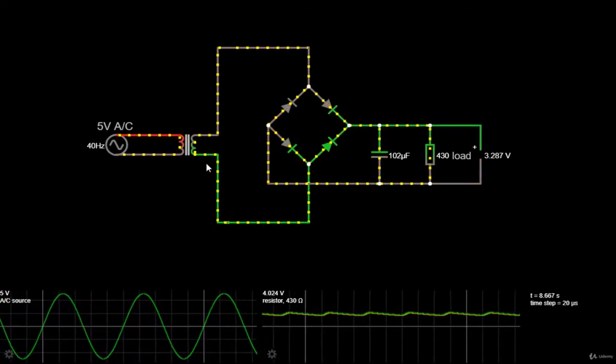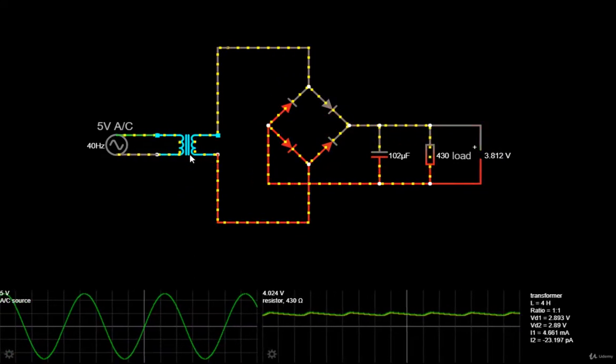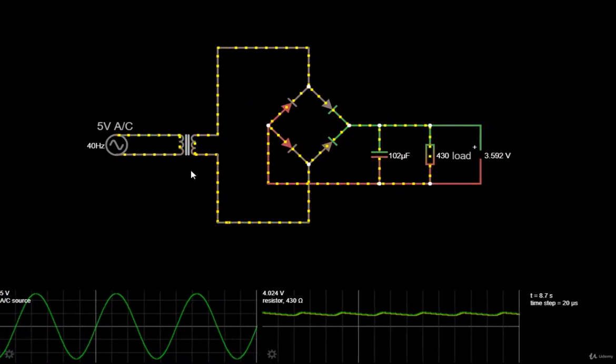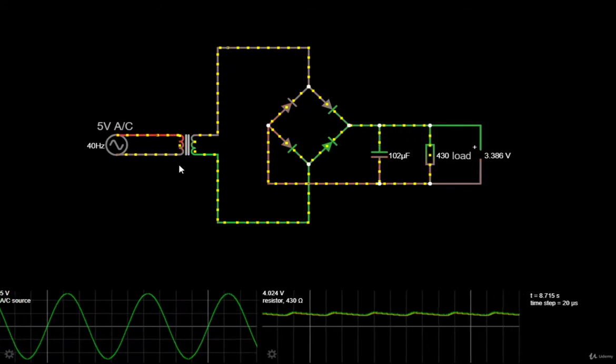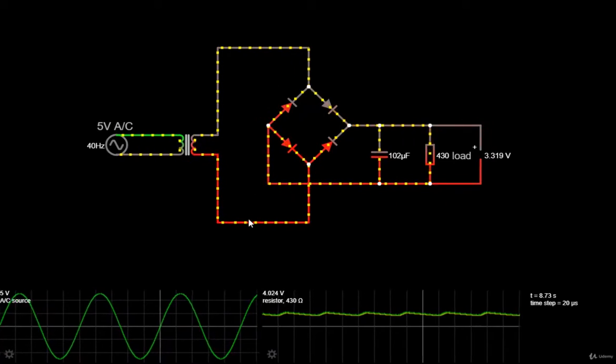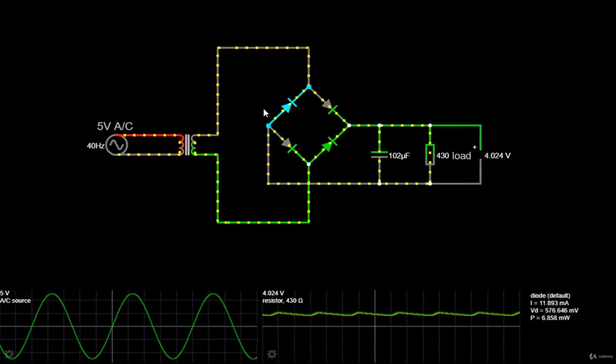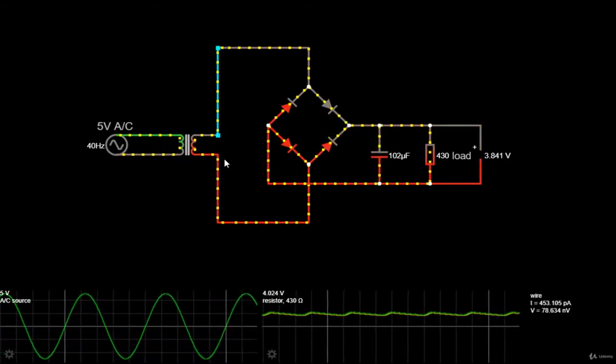Although it is usual in electronic circuits to use a voltage transformer to increase a voltage, sometimes a suitable step-up transformer or specially insulated transformer required for high voltage applications may not always be available. One alternative approach is to use a diode voltage multiplier circuit which increases or steps up the voltage without the use of a transformer.